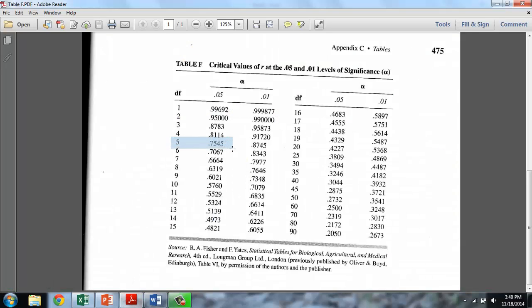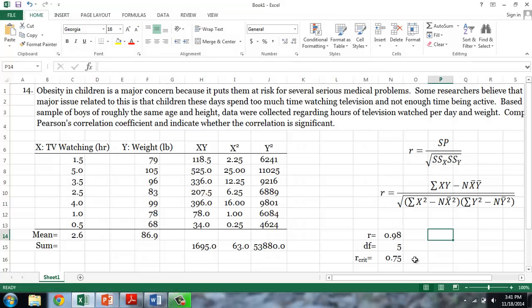Using the table, we can see that for five degrees of freedom at the 0.05 level of significance, our critical value of R is 0.7545. Since our calculated R, 0.98, is greater than our critical value of 0.75, this correlation is significant.